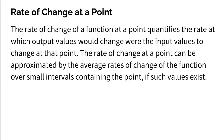First, let's get that textbook definition for the rate of change at a point. The rate of change of a function at a point quantifies the rate at which output values would change were the input values to change at that point. The rate of change at a point can be approximated by the average rates of change of the function over small intervals containing the point, if such a value exists.